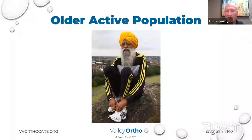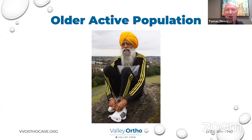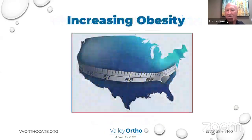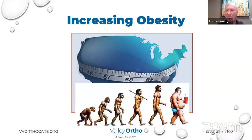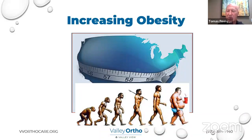Fauja Singh was the first 100-year-old to run a marathon — apparently at age 92, he ran a five-and-a-half-hour marathon. We're a country with a significant obesity problem, and obesity is huge for knee arthritis. As I tell my patients: for every pound that you lose, it's like four pounds coming off the knee — that's how the biomechanics work.